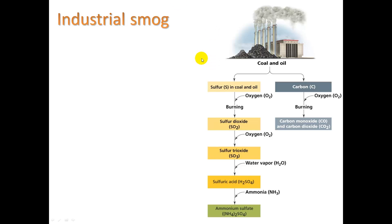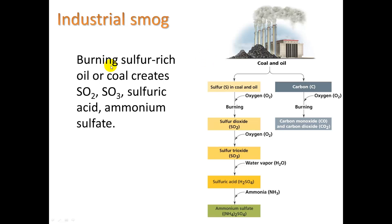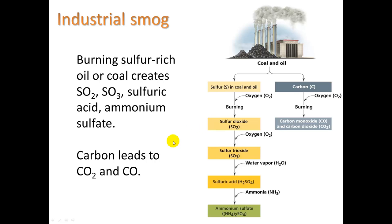Looking at the chemistry: burning sulfur-rich oil or coal creates SO2, SO3, sulfuric acid, and ammonium sulfate — you can lump these together as sulfur oxides (SOx). Some of those go on to form sulfuric acid. Burning coal also releases carbon, which when burned leads to CO2 and CO. So industrial smog mostly contains sulfur oxides and carbon oxides like carbon monoxide and carbon dioxide.